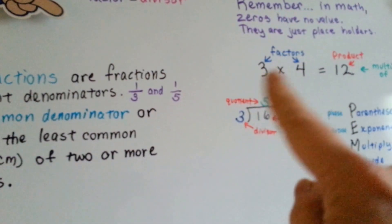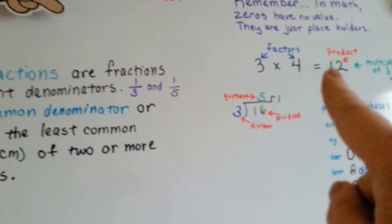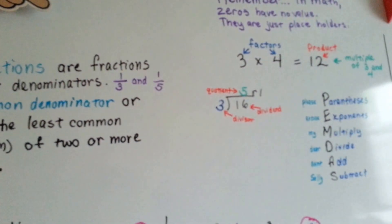Remember, the factors are the numbers you multiply together to get the product, and the product is a multiple.